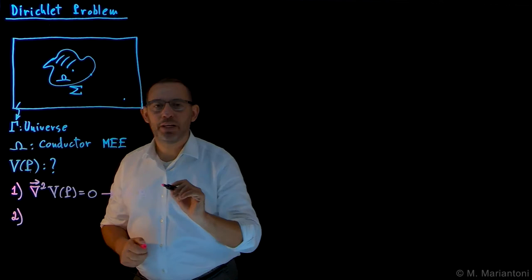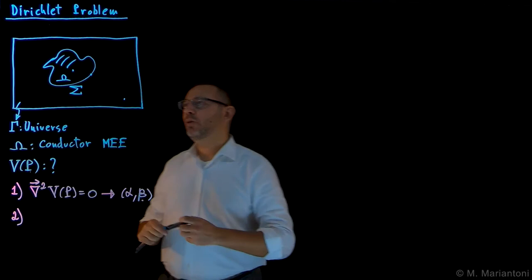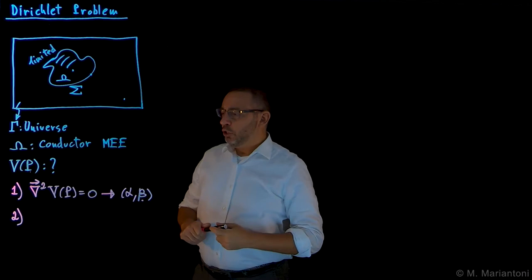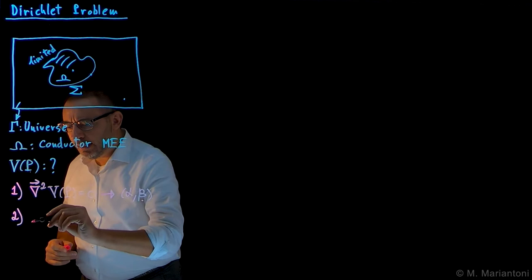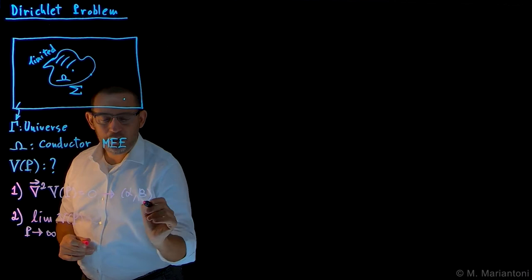The second condition attempts to find or set one of these parameters. This is always the case when the distribution Ω is limited in space — which is quite often the case, since in real life everything is limited in space. So in this case, we want to set our boundary conditions at infinity: that is, the limit as point P goes to infinity of V(P) has to be equal to zero. This condition usually allows us to determine the parameter β.